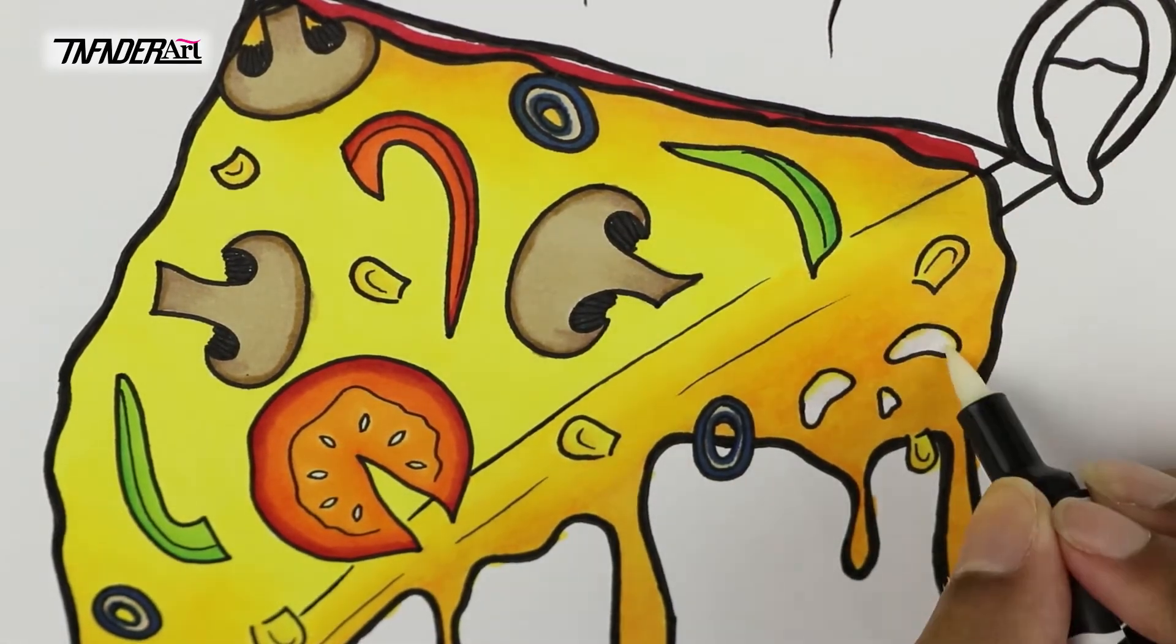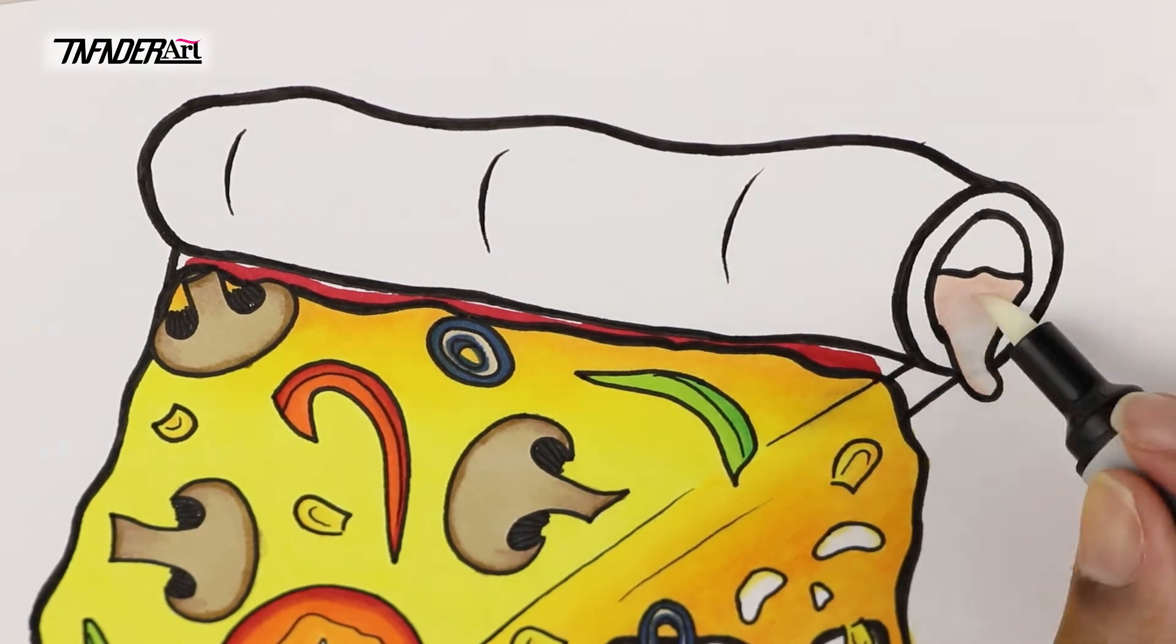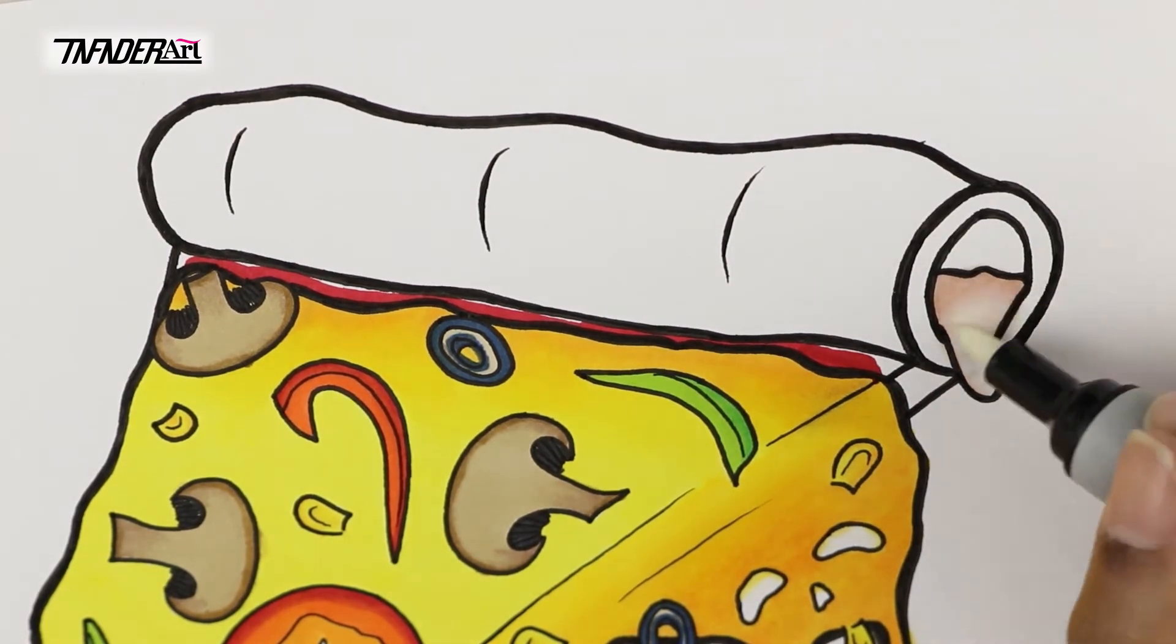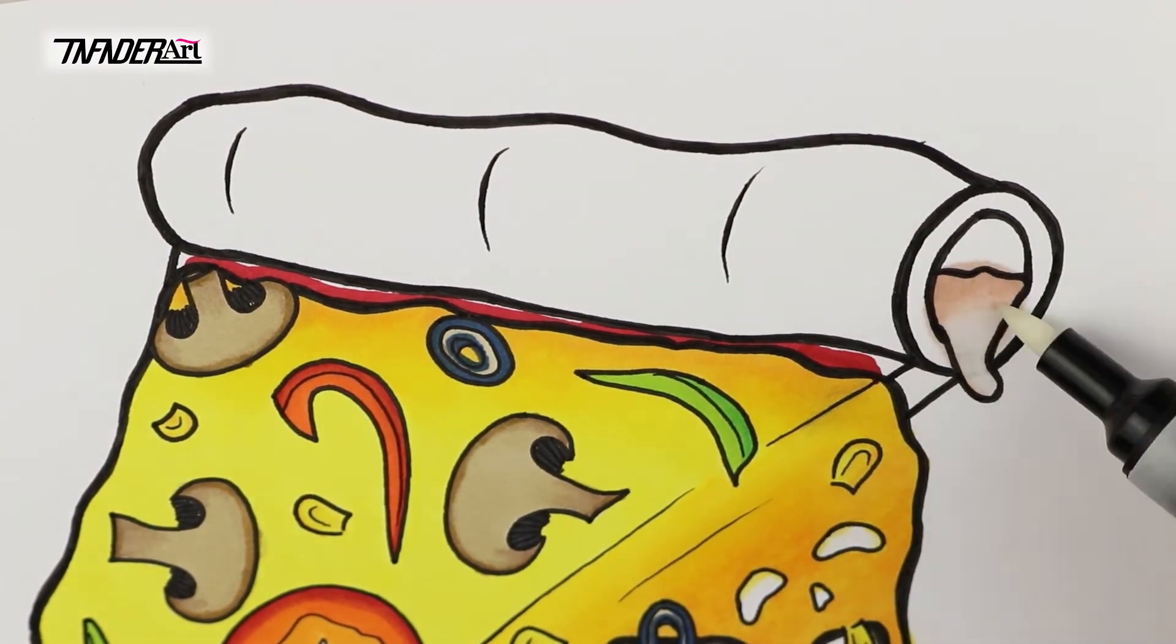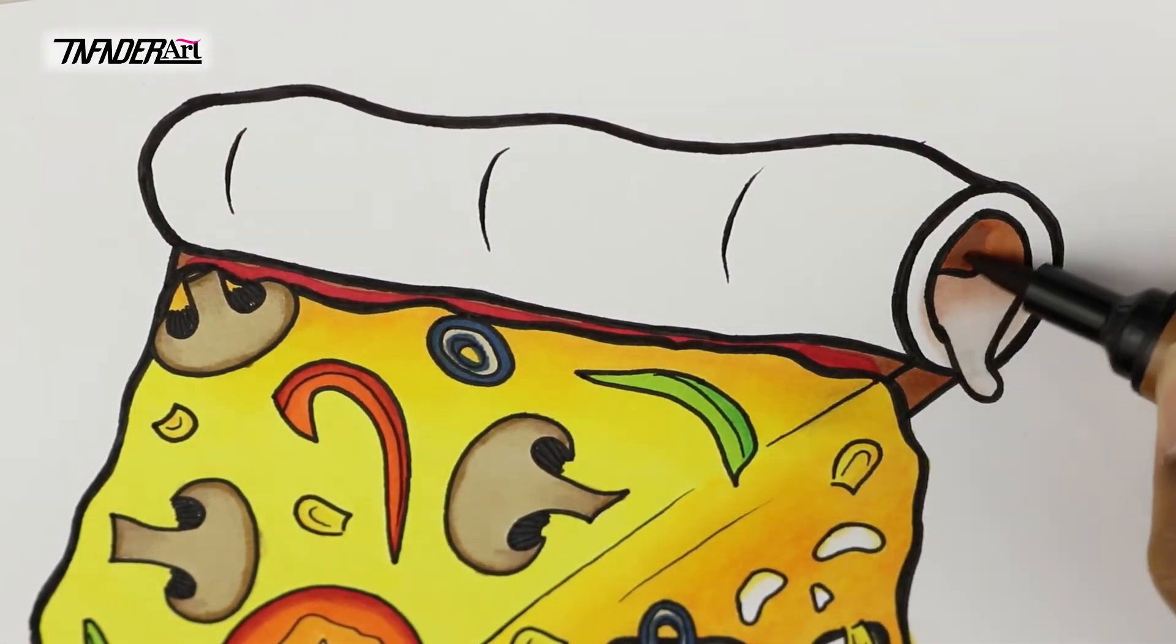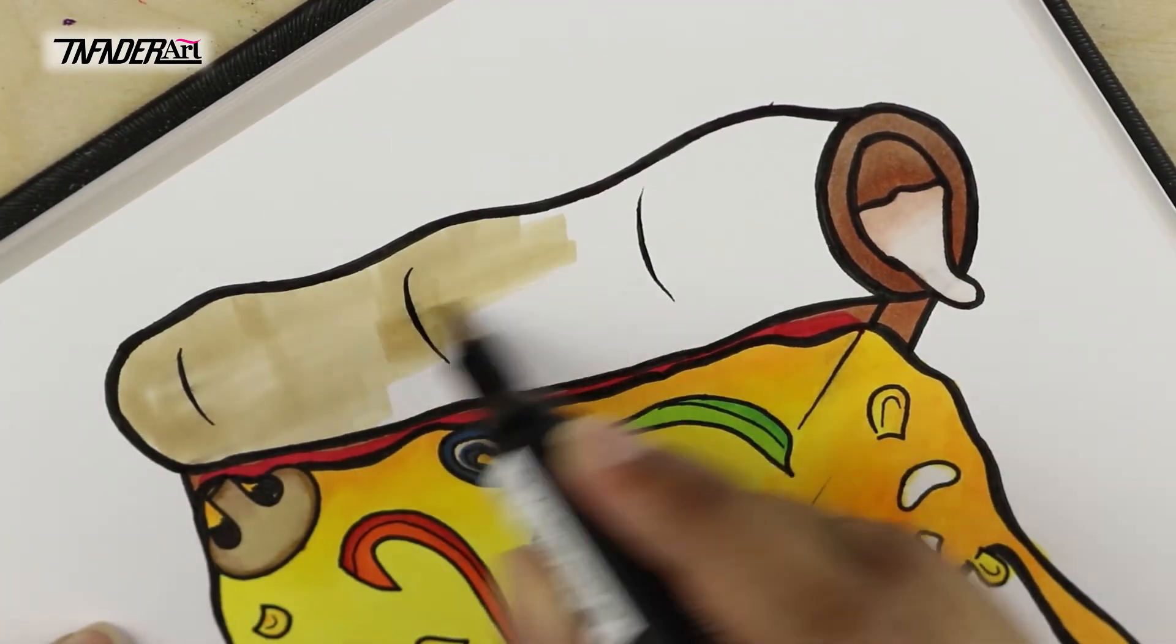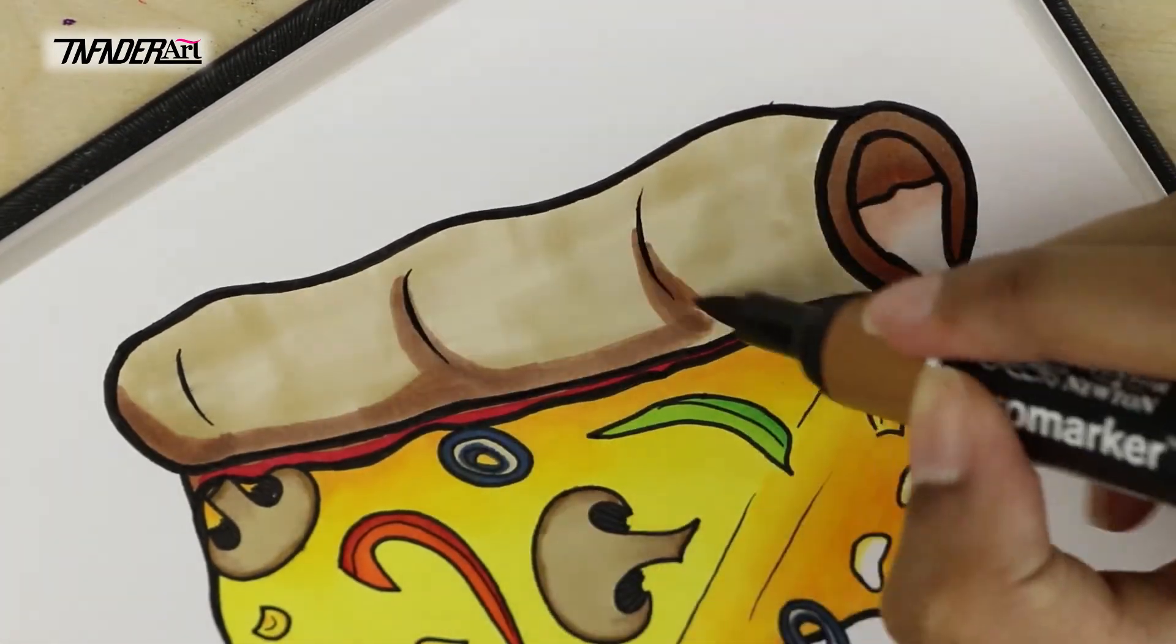In terms of the products I used, I used my Pigma Microns for the outline because they are waterproof and bleed-proof, so I will be able to use my alcohol markers on top of them without them bleeding. Also, they are much cheaper than purchasing Copic multiliners.